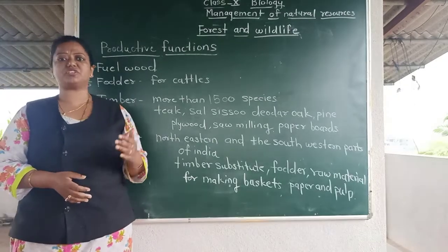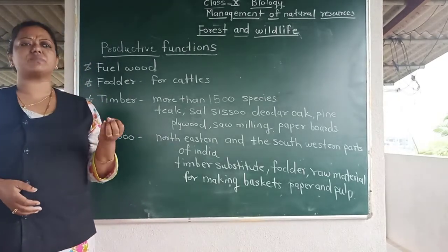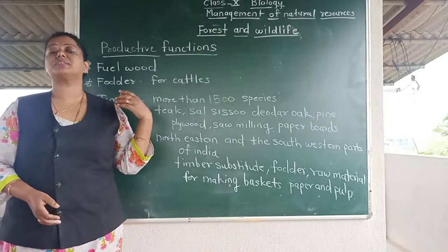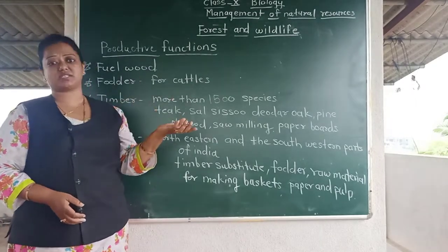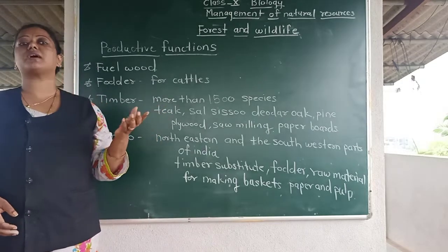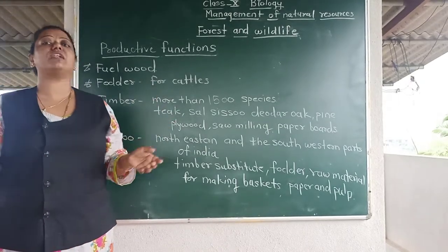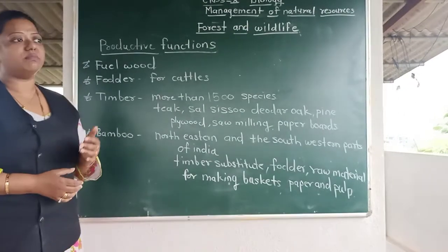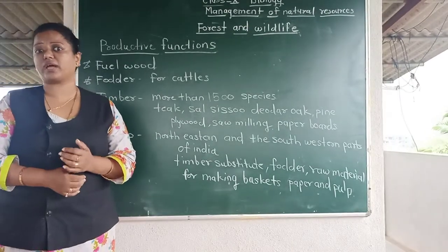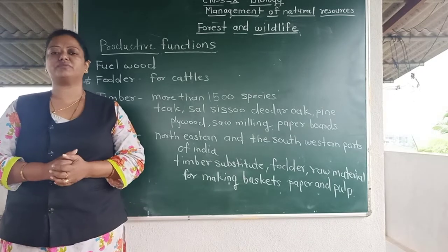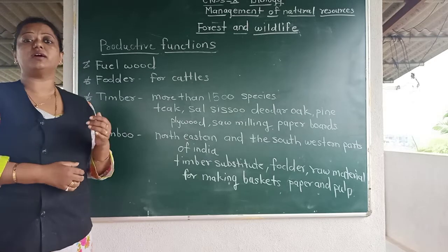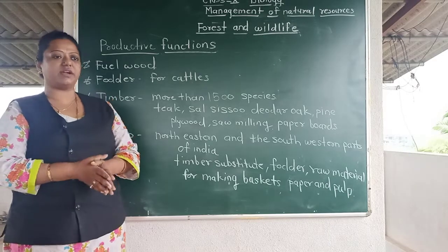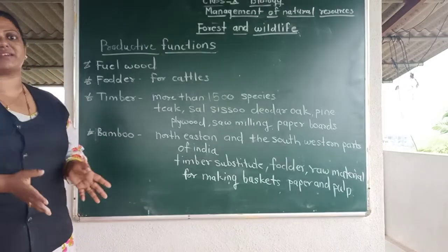Fodder means cattle and sheep eat herbs, shrubs, and grass from the forest. Farmers graze their animals in the forest because various nutritious grasses are available there. These are milk animals, and they require nutritious food for growth and to produce good quality milk in proper amounts, making the forest essential for their grazing.